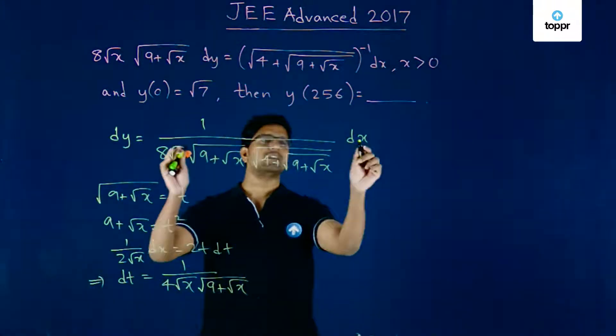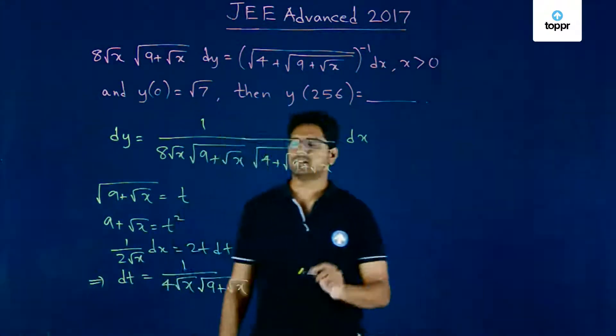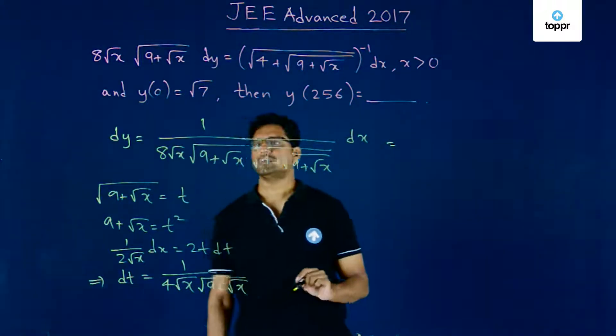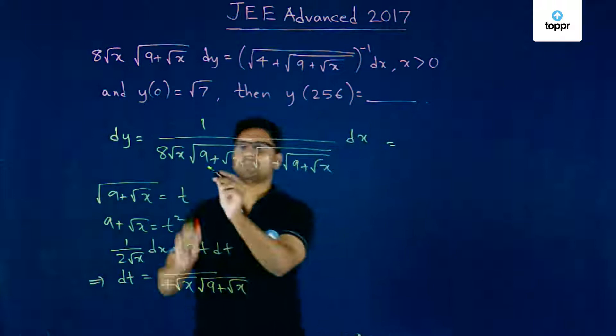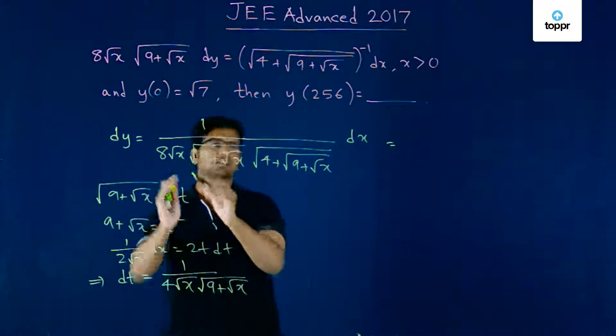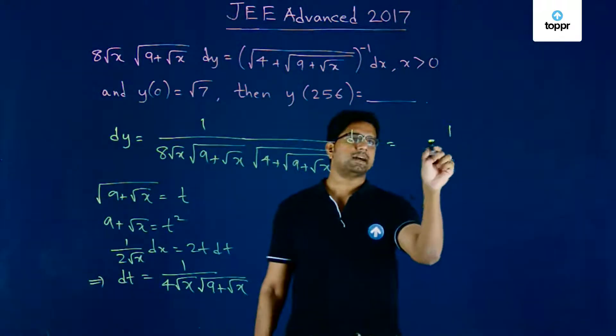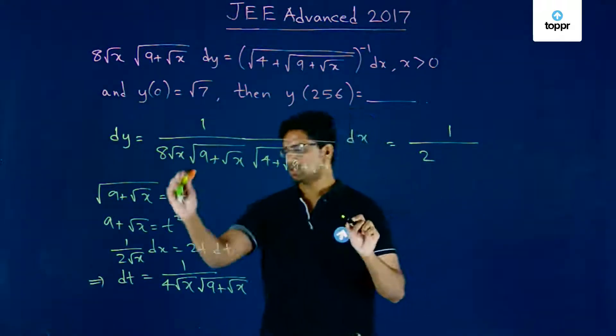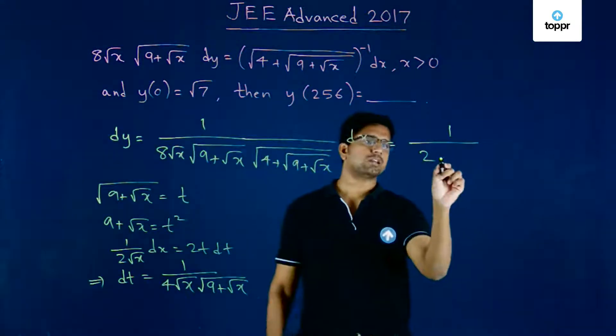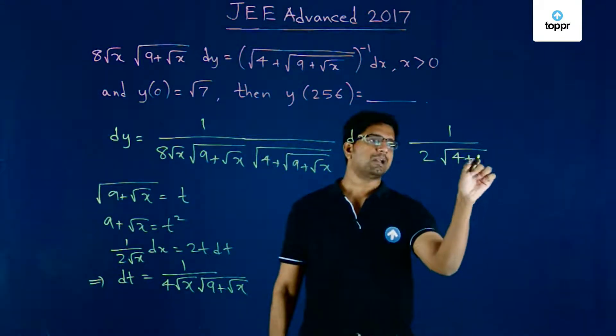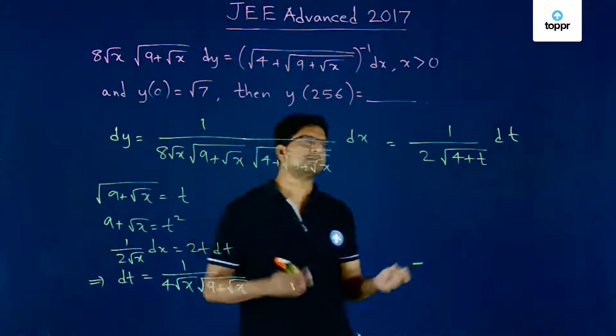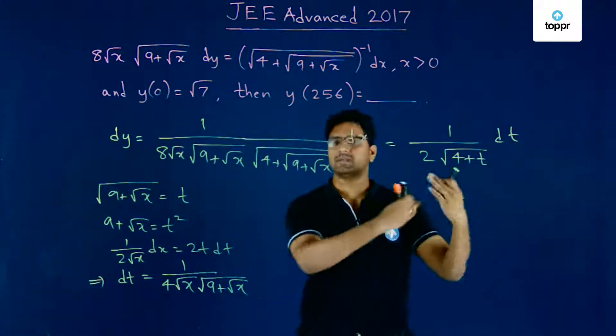Now we are in a position to integrate this considering t. This integral actually becomes: this part is taken care of by the dt thing, so we only take 1 by 2 because there is 8 here and only 4 here, and we can write this as square root of 4 plus t dt. Very good form, we can very well integrate it.